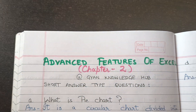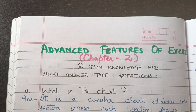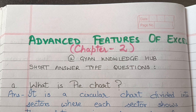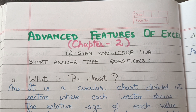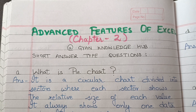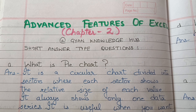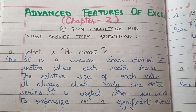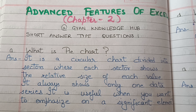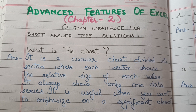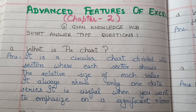Now we will do the short answer questions. First question is: what is a pie chart? It is a circular chart divided into sectors where each sector shows the relative size of each value. It always shows only one data series. It is useful when you want to emphasize a significant element.